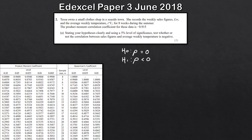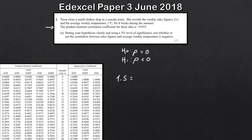The test statistic is usually always given with these questions. Reading the question, we're told the PMCC for this data is minus 0.915. That is our test statistic.